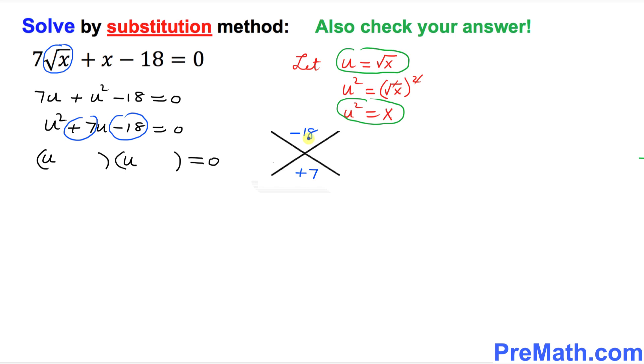So let's find the factors of this negative 18. So the possible factor is going to be 2 and 9. 2 times 9 is 18. So let's fix their sign.